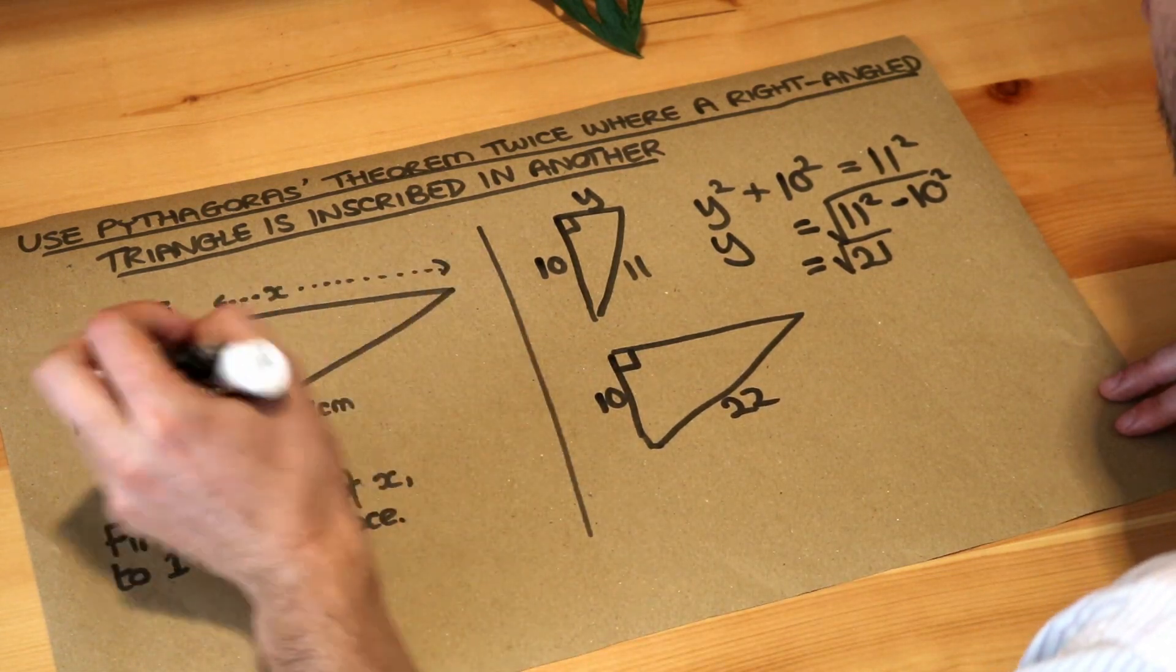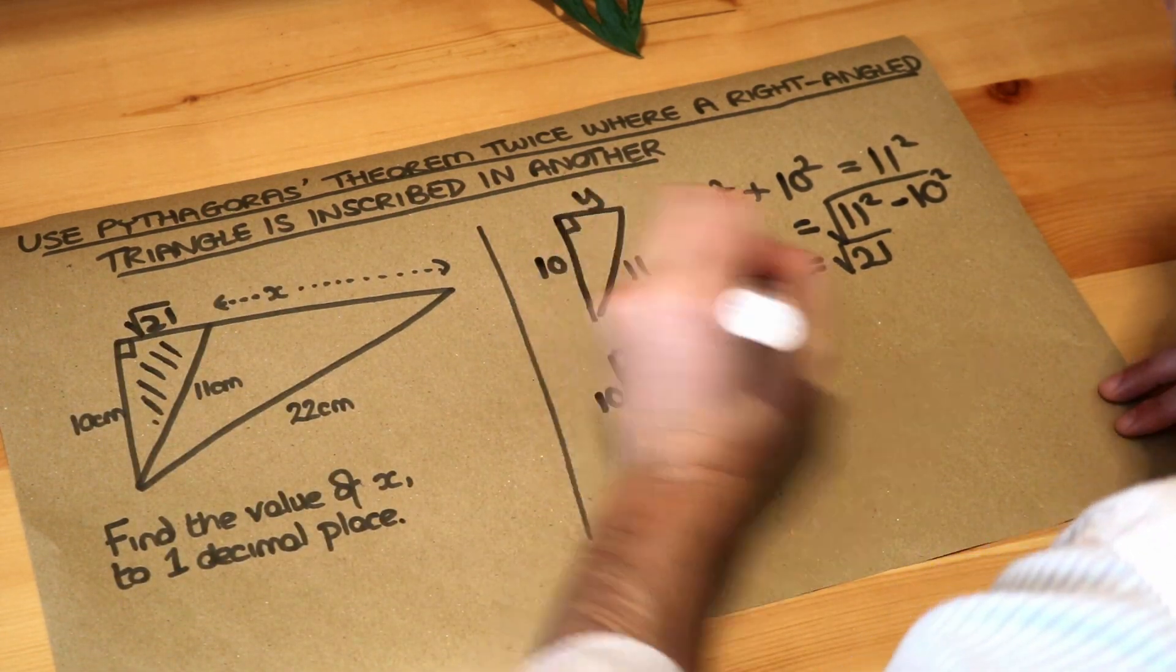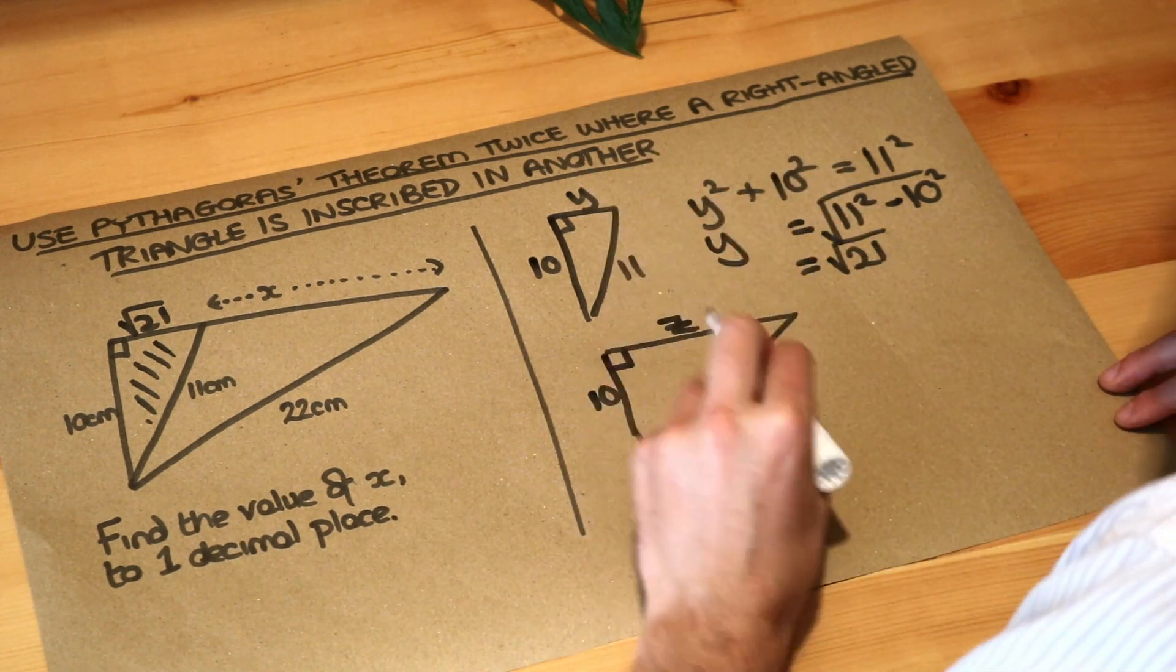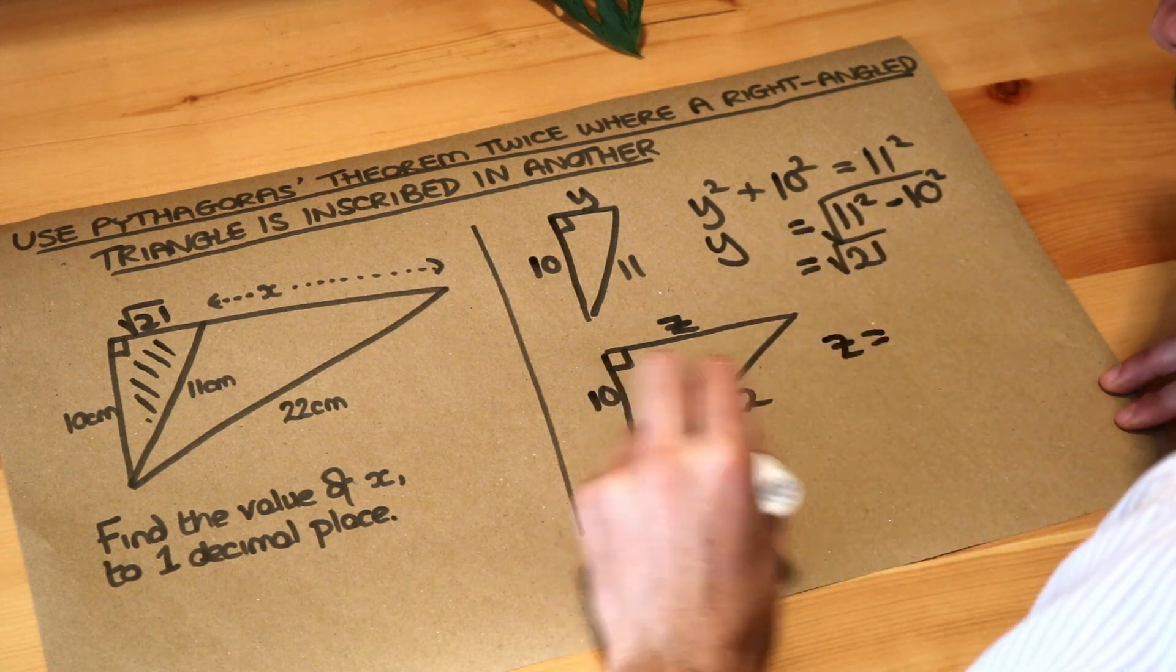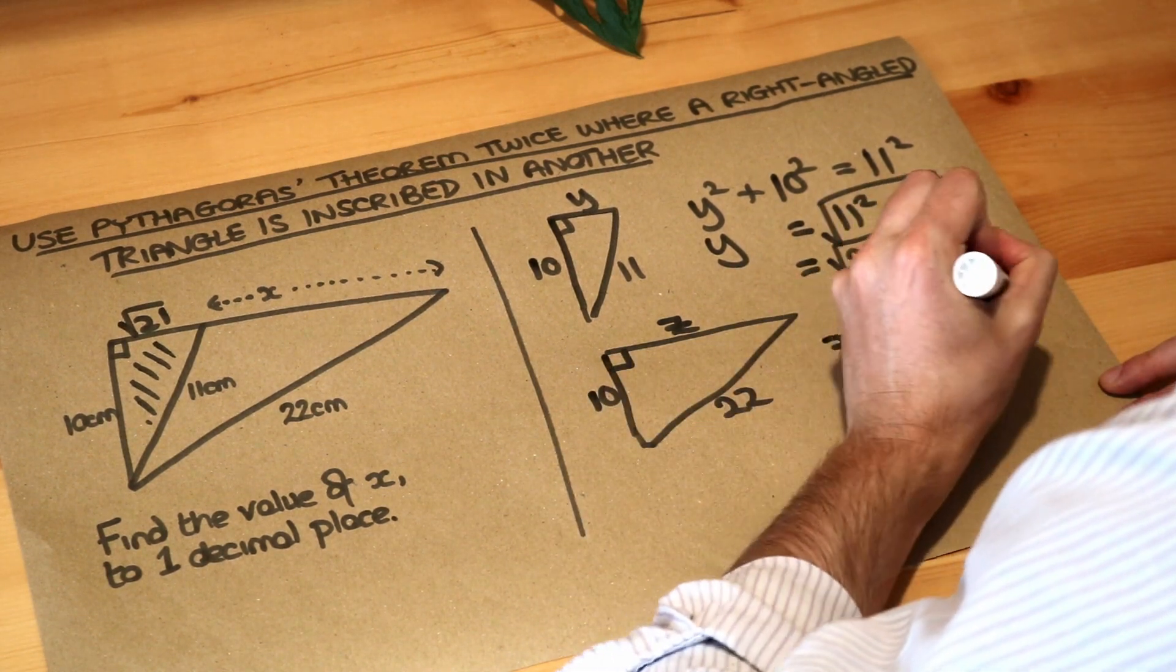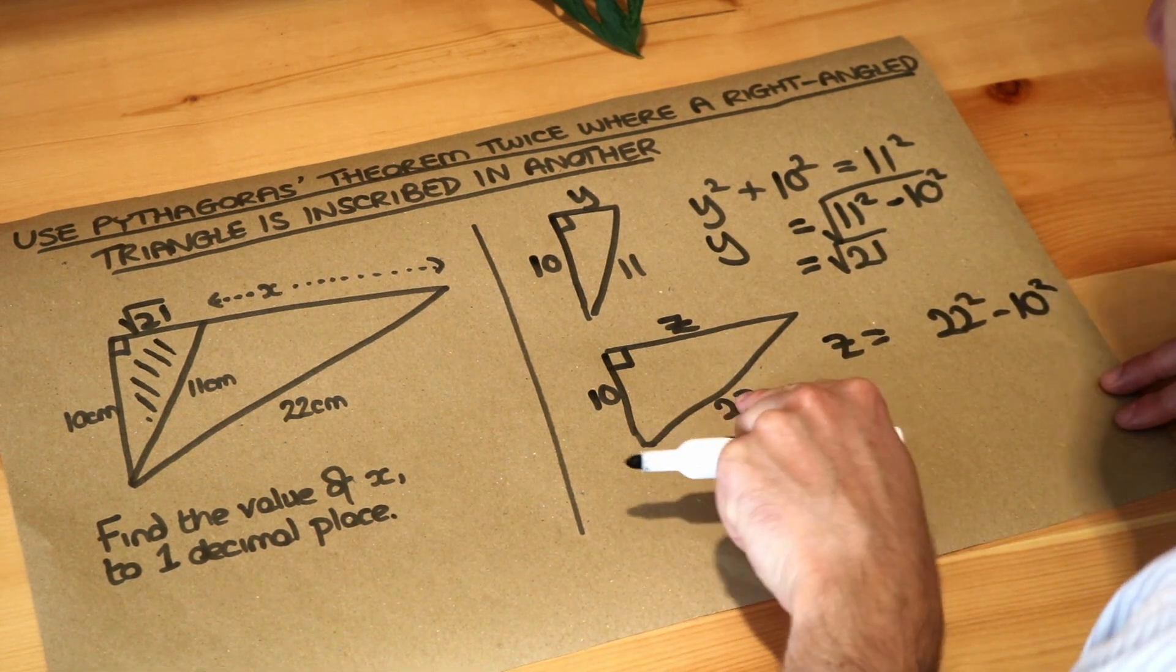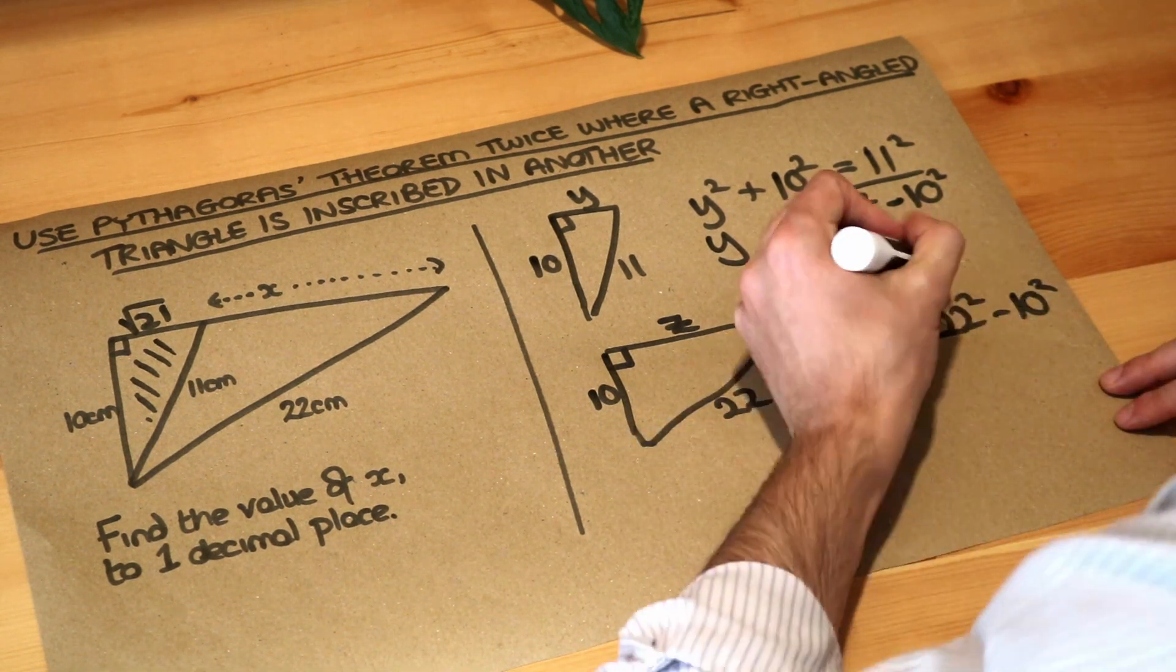I'm going to call this whole length here Z which is a letter I haven't used yet and I'm going to get the answer directly. We're trying to find a shorter side so remember you can subtract the squares so 22 squared minus 10 squared. If you're trying to find the hypotenuse, so this longest length you would add the squares and then we have to square root it.